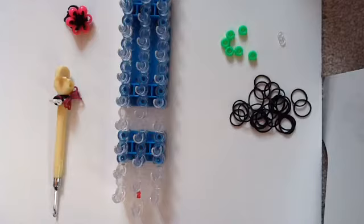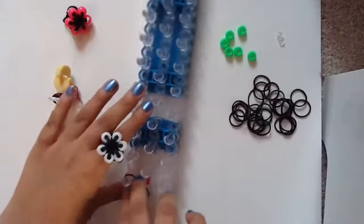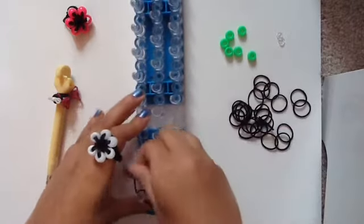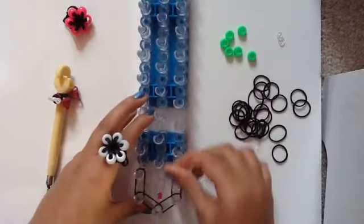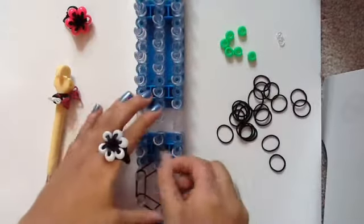So we're going to start with some black rubber bands, which will be your center rubber band, so it's a single for each one. Okay, so we're going to start with making a little honeycomb pattern. Like this.